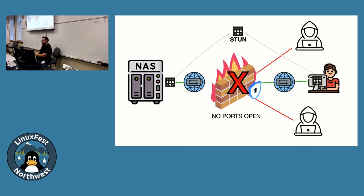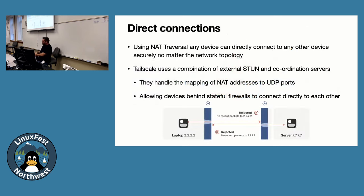Tailscale establishes direct point-to-point connections with tunnels between each device. There is a coordination server using the STUN protocol that lives in the cloud, but all data between two devices is fully encrypted end-to-end — the STUN server has no idea what you're saying between the two clients. The private key never leaves your device, and that's really important. In cryptography terms, that means Tailscale doesn't have the computational ability to unlock what you're sending or receiving.